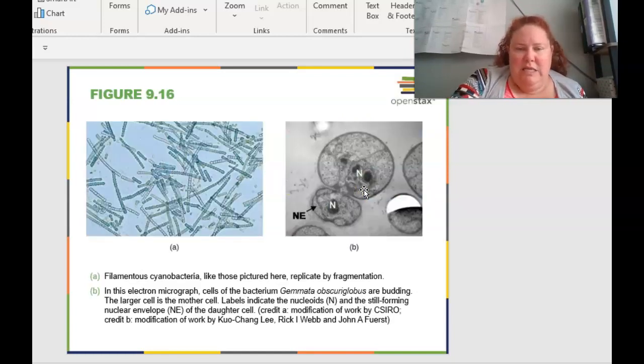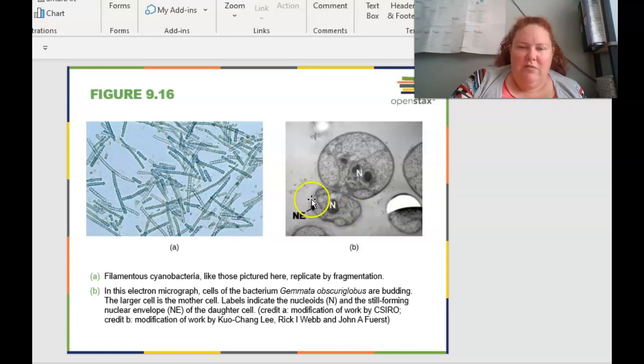And the last slide would be looking at this. This shows the replicate by fragmentation, so different types of replicating. We talked about fission. We talked about a couple different other ways. And then fragmentation is basically where something fragments off and then it starts and it regrows the whole thing. We're in this electron micrograph. The cells are budding. And the larger cells, the mother cell, where the one that's budding off is going to be the daughter cell. So basically, you duplicate your genetic information and it buds off and pinches off and goes and makes a new cell.